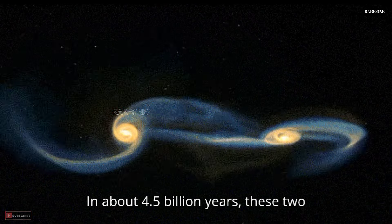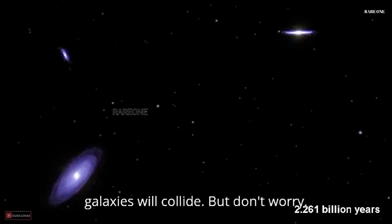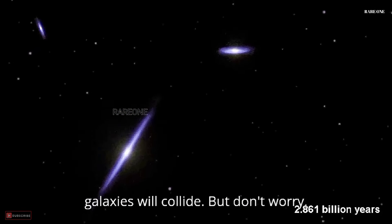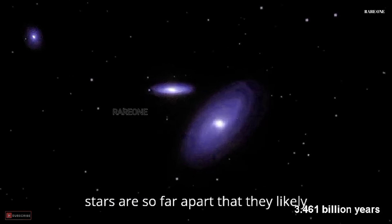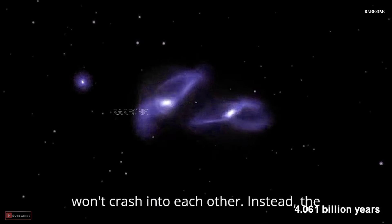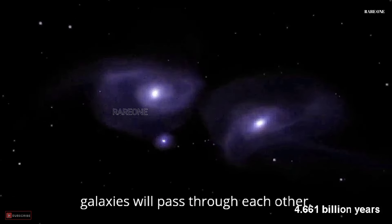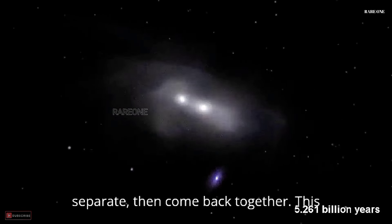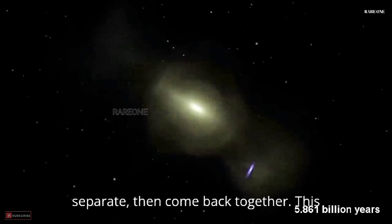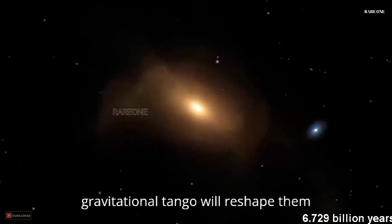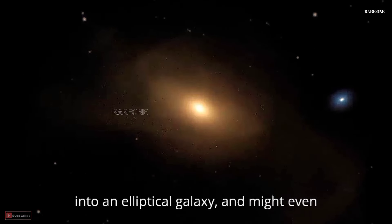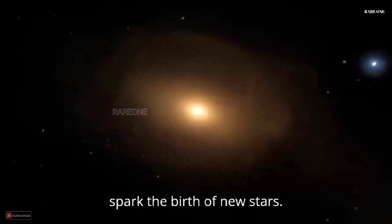In about 4.5 billion years, these two galaxies will collide. But don't worry. Stars are so far apart that they likely won't crash into each other. Instead, the galaxies will pass through each other, separate, then come back together. This gravitational tango will reshape them into an elliptical galaxy and might even spark the birth of new stars.